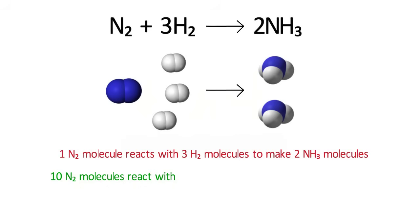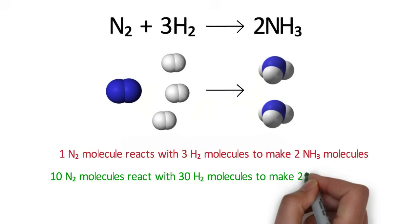How many hydrogen molecules would they react with? That's right, 30, and the reaction would produce 20 ammonia molecules.